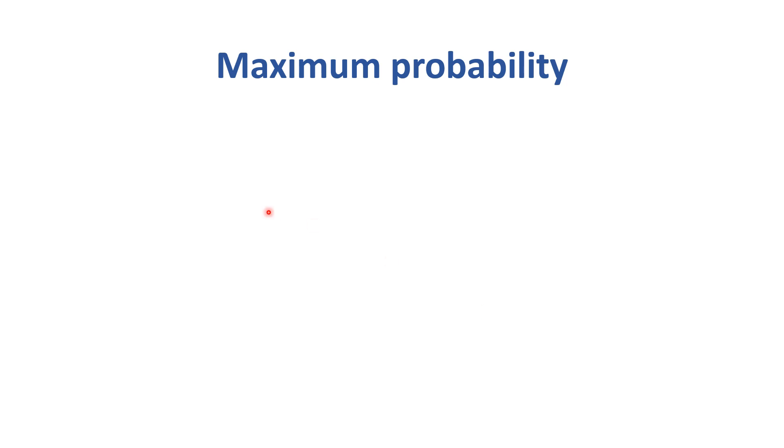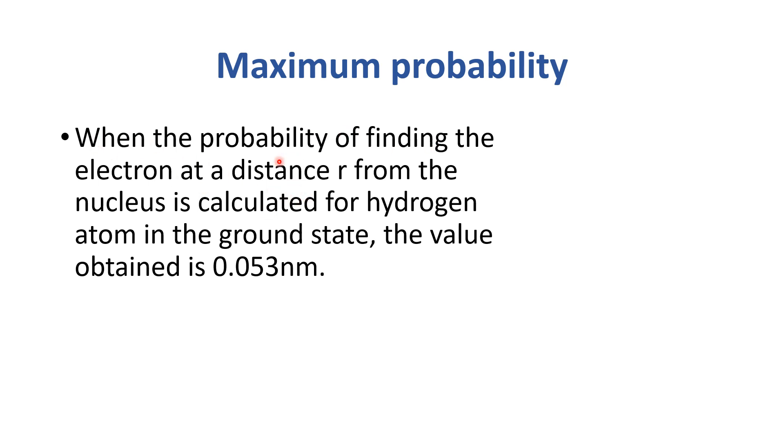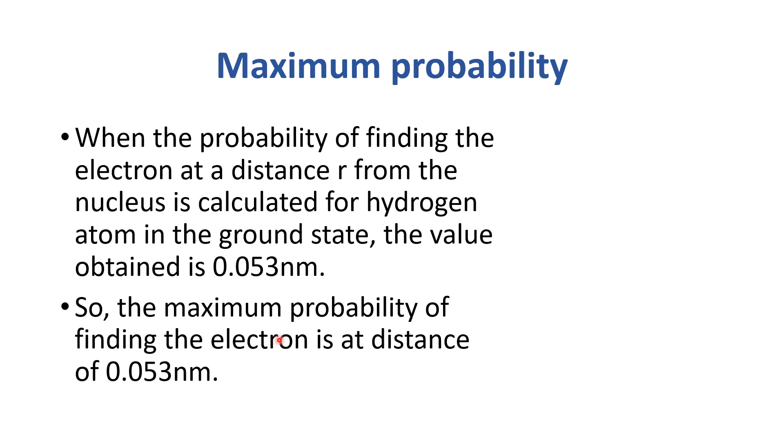Let's see where we find out the maximum probability. When the probability of finding the electron at a distance r from the nucleus is calculated for hydrogen atom in the ground state, the value obtained is 0.053 nm. So the maximum probability of finding the electron is at a distance of 0.053 nm.